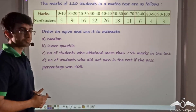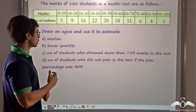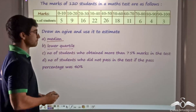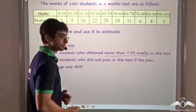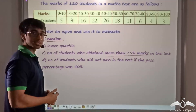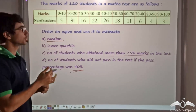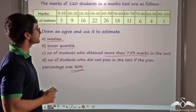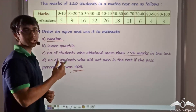From this data we have to draw an ogive and use it to estimate the median, the lower quartile, the number of students who obtained more than 75% marks, and the number of students who did not pass if the pass percentage was 40%. To do this, the first thing we need is the cumulative frequency of the given class distribution.